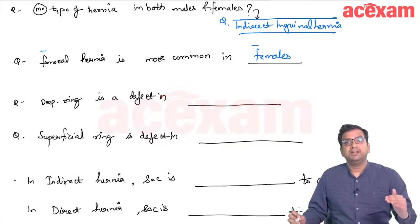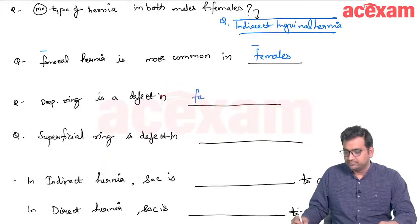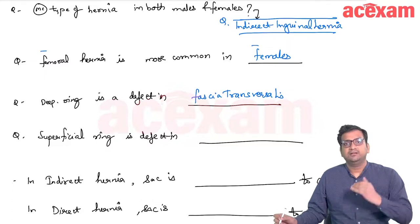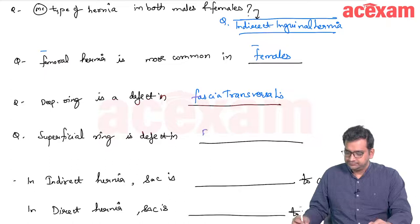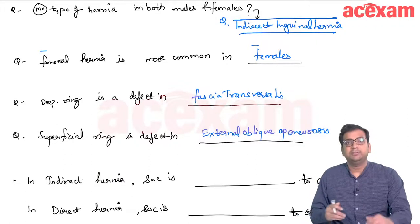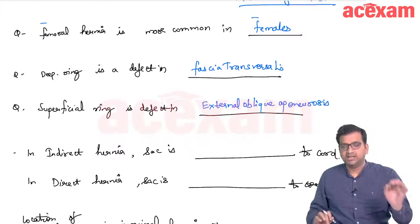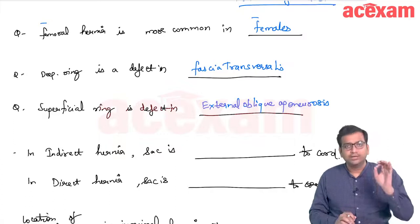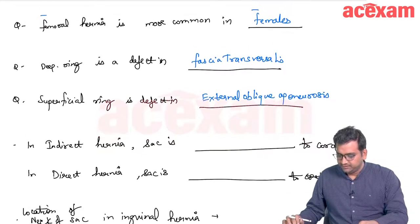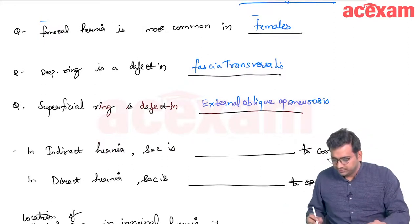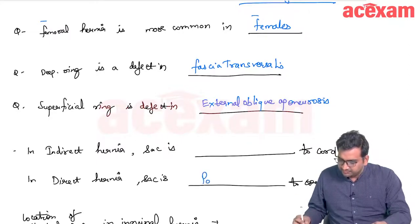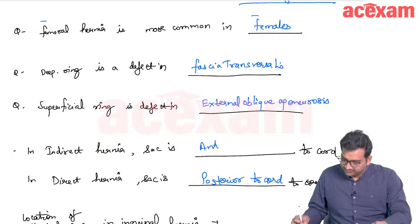The deep ring is a defect in fascia transversalis, and the superficial ring is a defect in external oblique aponeurosis. Between the deep ring and superficial ring lies the inguinal canal. In direct hernia, the sac is posterior to the cord; in indirect hernia, the sac is anterolateral to the cord.